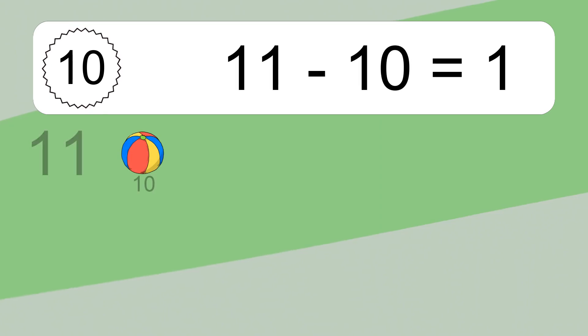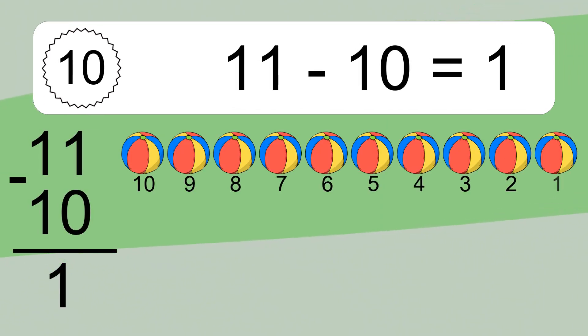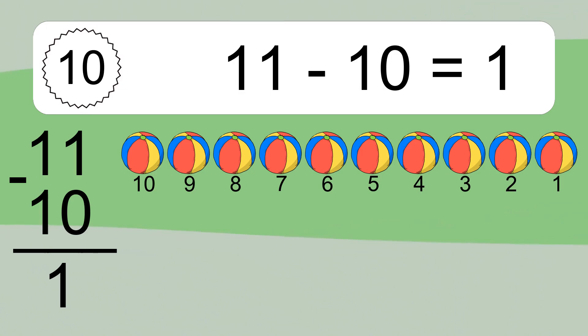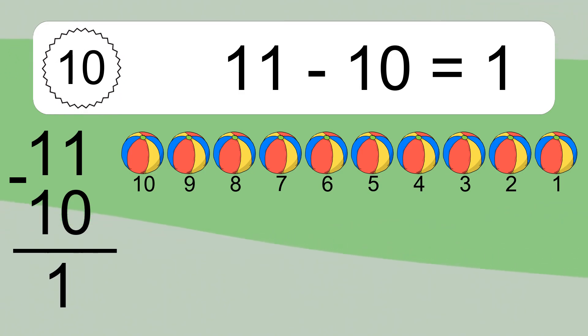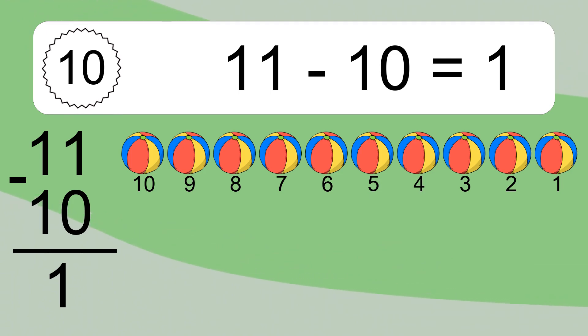11 minus 10 equals what? 11 minus 10 equals 1. Let's count it: 10, 9, 8, 7, 6, 5, 4, 3, 2, 1.